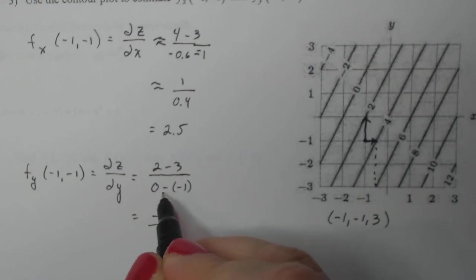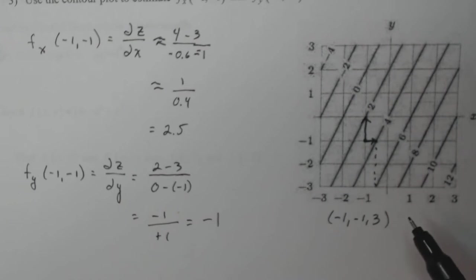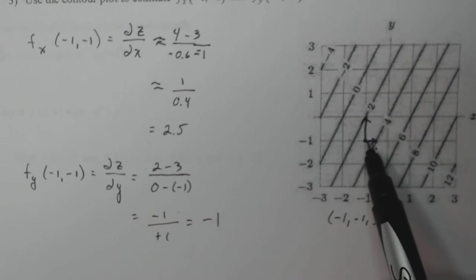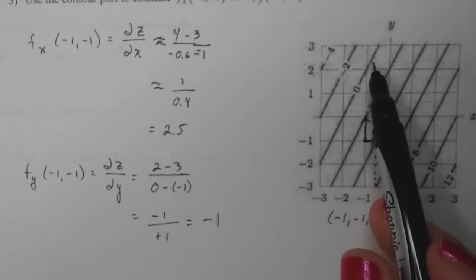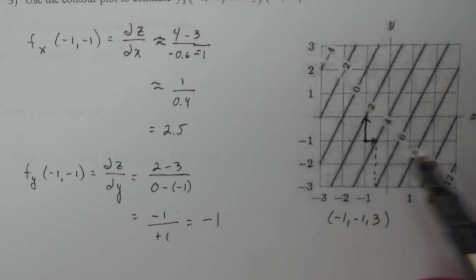If I simplify that, I get negative one divided by positive one, which gives me negative one slope. So does that make sense? Well, if I move parallel to the y axis, the z values decrease. So that means my derivative should be negative. So that looks about right.